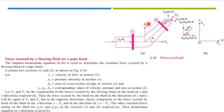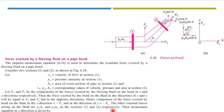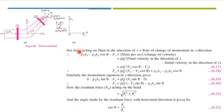Fx and Fy are the components of the forces exerted by the flowing fluid on the bend in the x and y directions. The force exerted by the bend on the fluid in the x and y directions will be equal to Fx and Fy but in opposite direction. Hence, the component of force exerted by bend on fluid in x direction will be minus Fx, and in y direction will be minus Fy. The other external forces acting on the fluid are P1·A1 and P2·A2 at sections 1 and 2 respectively. We can now write the momentum equation in the x direction.